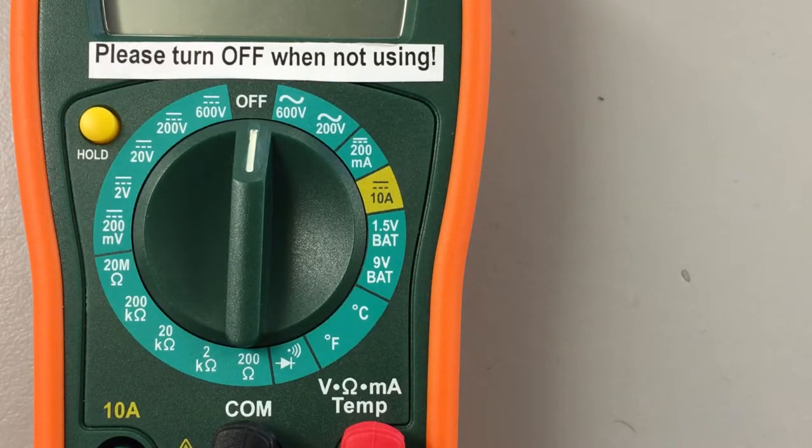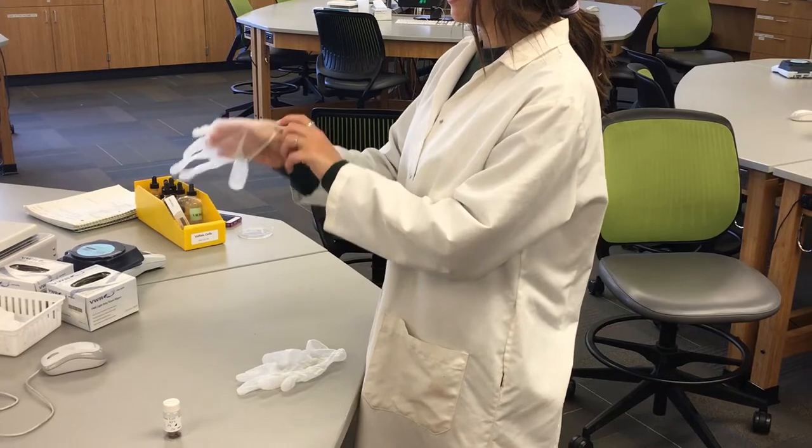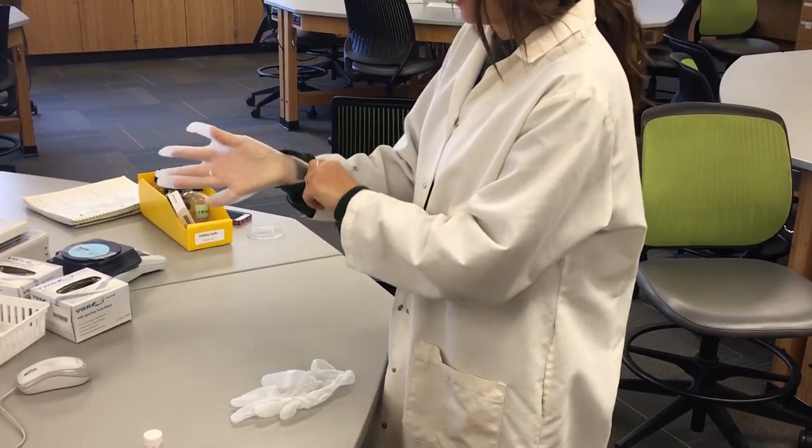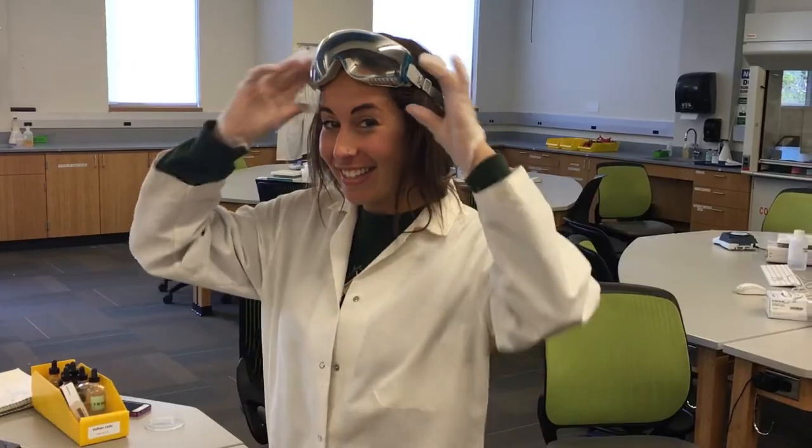Now that you know all of the components of a voltmeter, let's take some readings. Since we will be using hazardous chemicals in this experiment, Malak will wear safety goggles and gloves. Make sure you take safety precautions anytime you use dangerous chemicals.